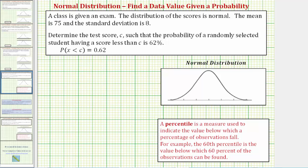Welcome to an example on how to use the TI-84 graphing calculator to determine a data value given a probability involving a normal distribution.